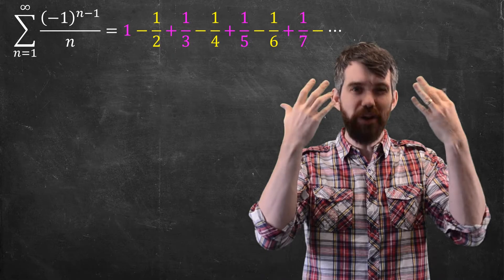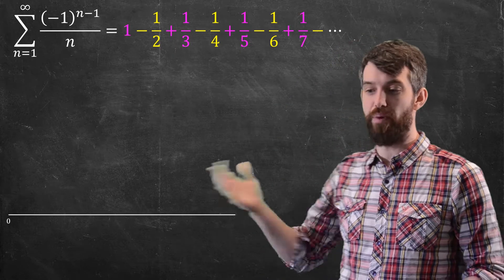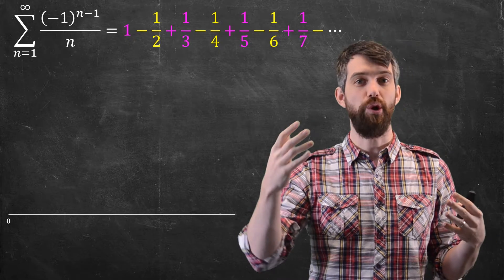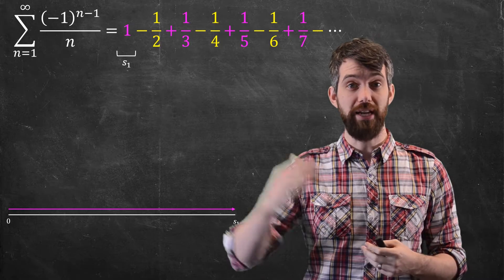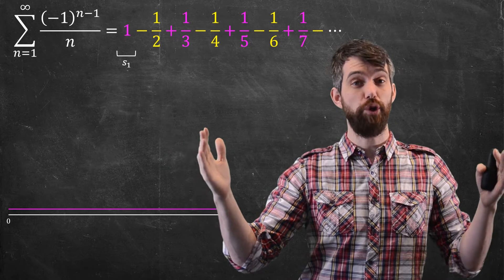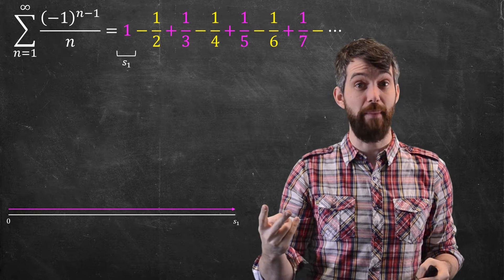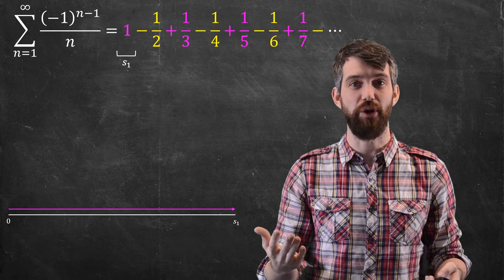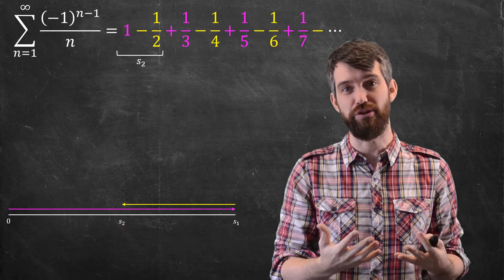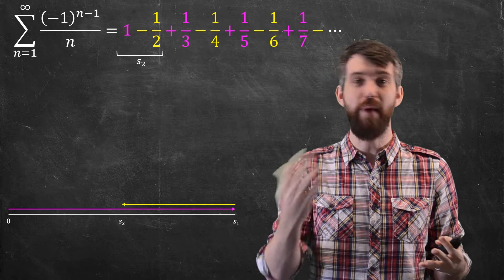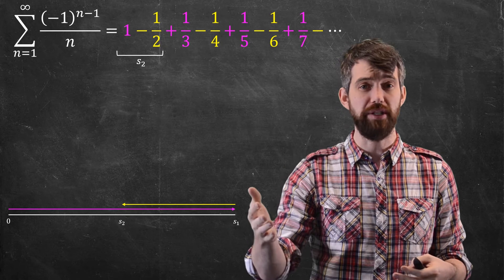Here's how I want to visualize what this alternating series does. I start with a number line from 0 to 1. The first partial sum s₁ goes to 1. For the second partial sum s₂, I subtract off 1/2, which takes me to 1/2. I took a big step out and then a smaller step back.